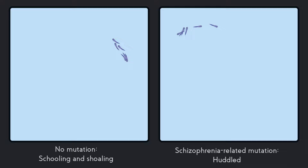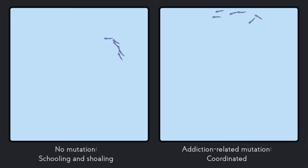The third mutation we made was in a gene that's actually related to addiction. In this case the fish were hyper-coordinated. They seemed to swim around continuously together in these schools.